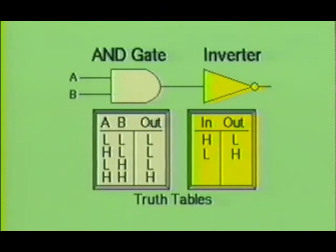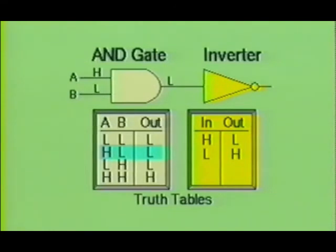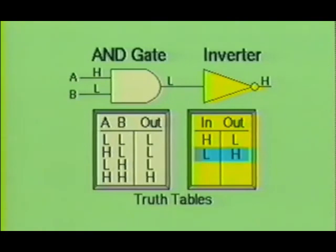Now let's see what would happen if we combined two of these gates. Here we see the AND gate and the inverter, or NOT gate, along with the truth tables for both. The AND gate had to have both A and B high to produce a high output, while the inverter simply inverted the signal. If we place a positive going signal into input A of the AND gate while input B remains low, the AND gate produces a low output. Since that low is fed into the inverter, the inverter's truth table shows the low will be inverted to a high. Therefore, by making input A high and input B low on the AND gate, we can expect a high at the output of the inverter gate.